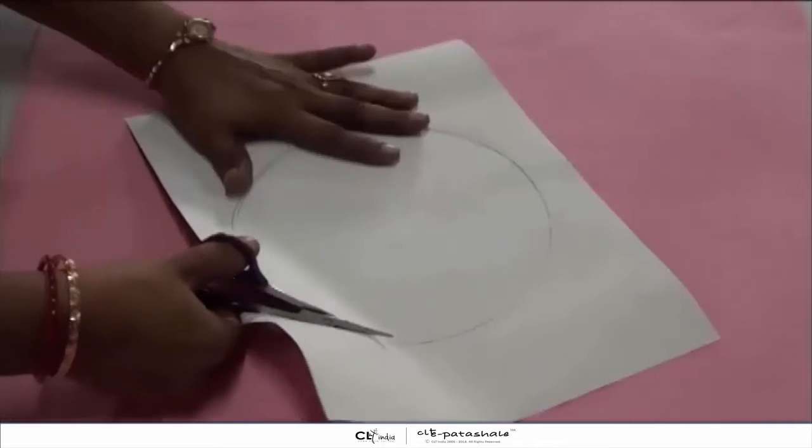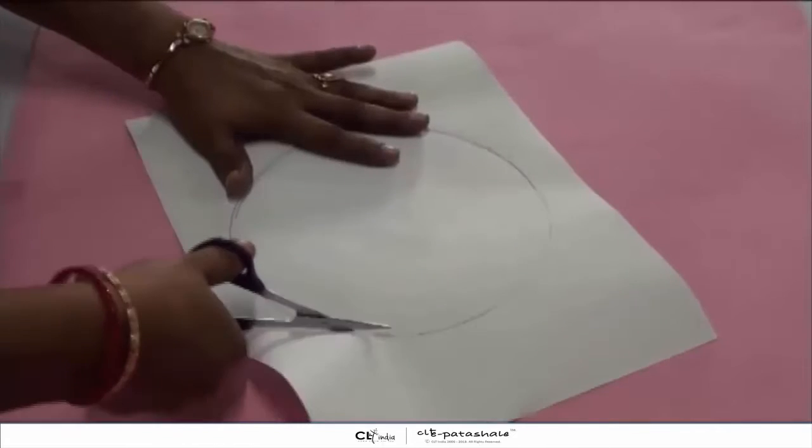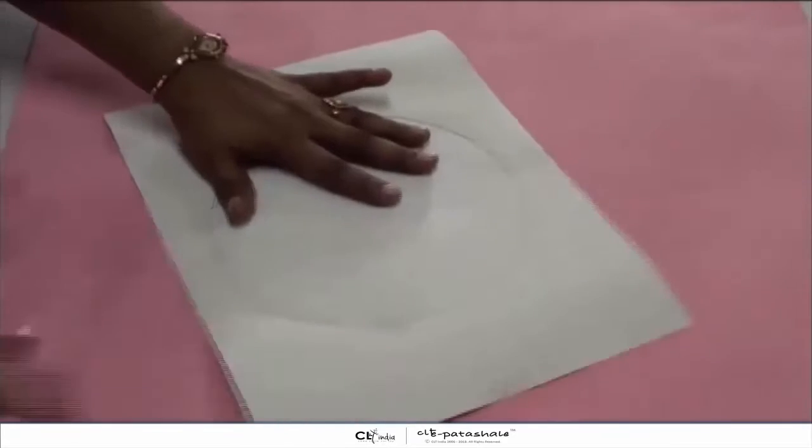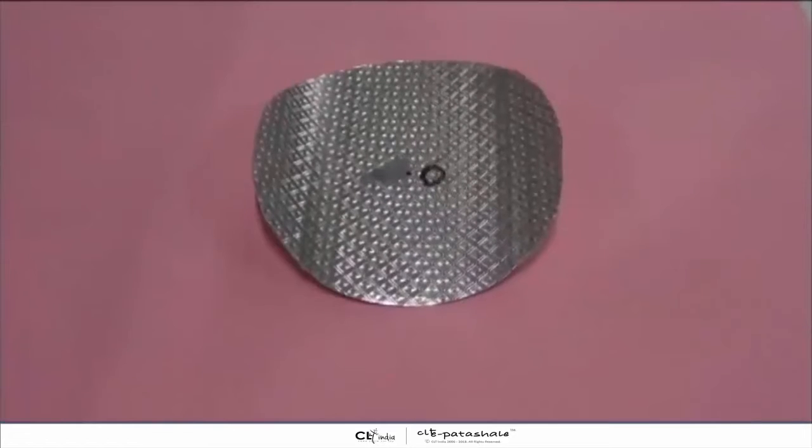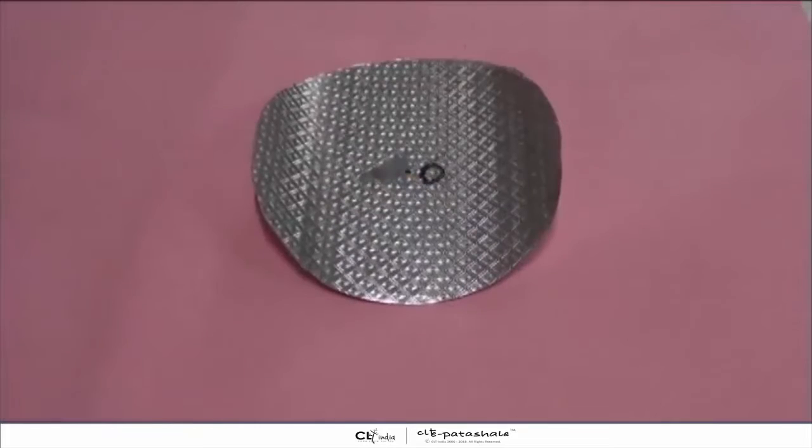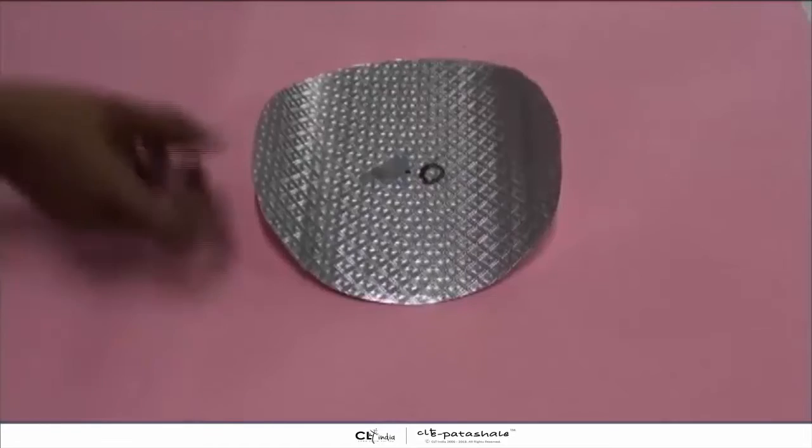Now after drawing the circle on a colored paper, you have to cut it. Now name its center as O. After that, paste the cutout on a rectangular sheet of paper.